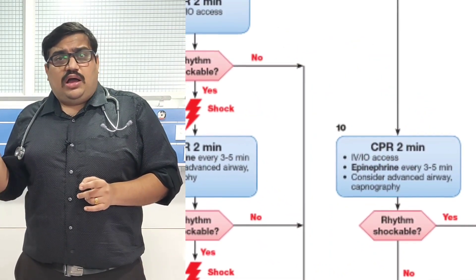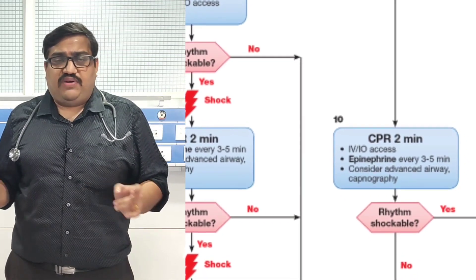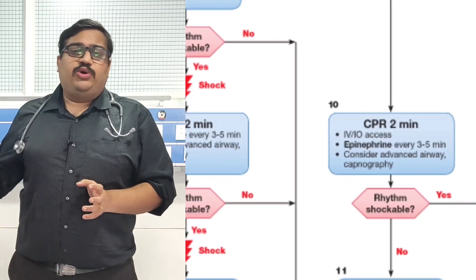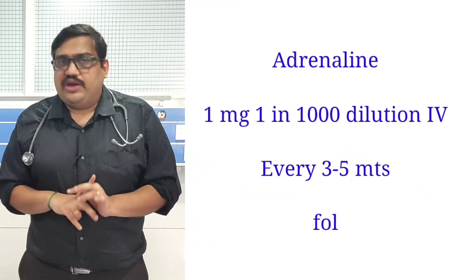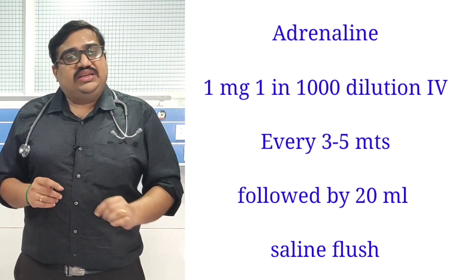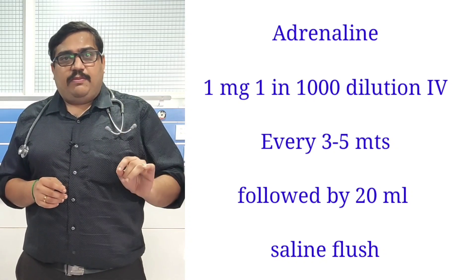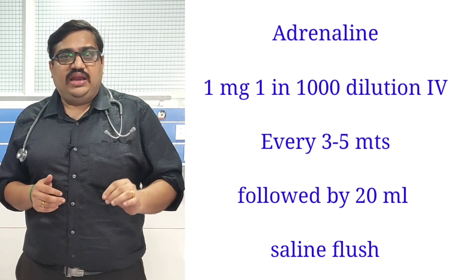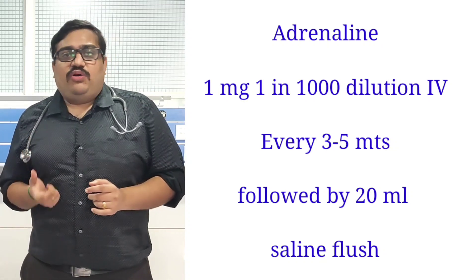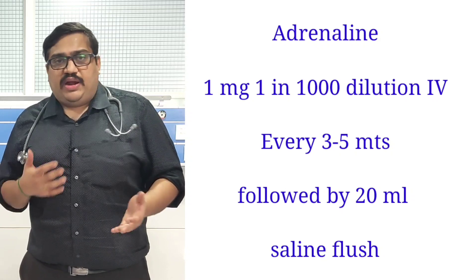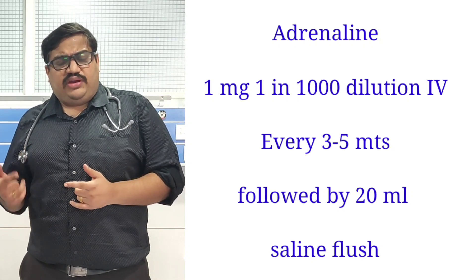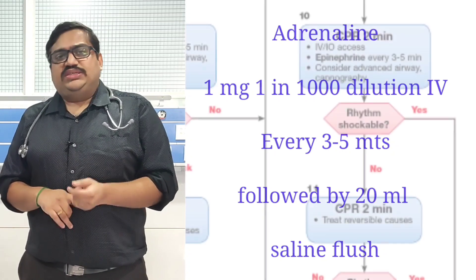Put an IV line on the patient — IV or IO access. If IV is not available after more than two attempts, go with an IO access. The first drug you need to give is epinephrine or adrenaline. It comes in 1 in 1000 dilution; in an adult cardiac arrest, give 1 ml — that is 1 mg — as an IV push, repeated every 3 to 5 minutes. Always give a 20 ml saline flush with the adrenaline, and if possible raise the arm so absorption is faster.